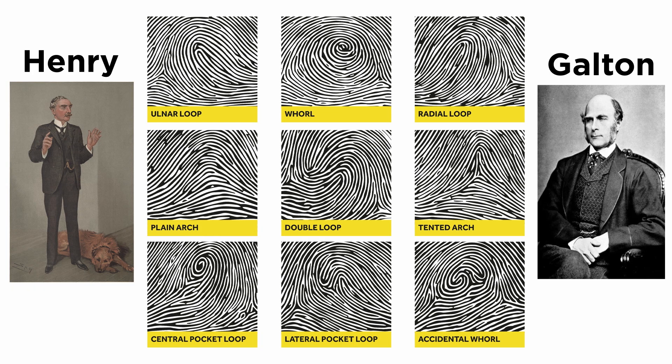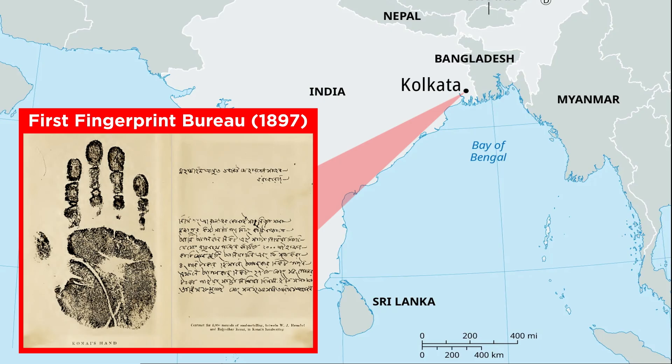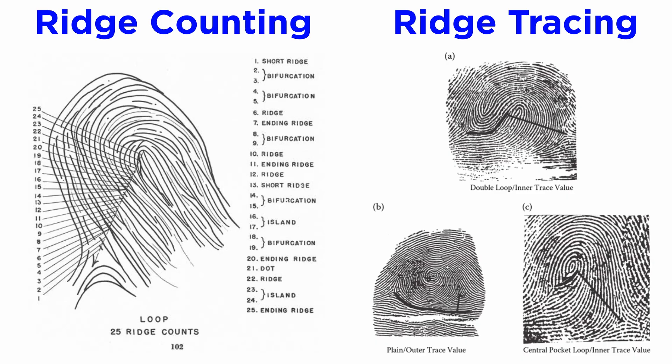To review, Henry studied fingerprints extensively and consulted Sir Francis Galton in devising a fingerprint classification system for criminal investigation. Due to Edward Henry's efforts, the first fingerprint bureau in history was established in Calcutta, India in the year 1897. Before learning how fingerprint classification works, we need to understand two basic concepts: ridge counting and ridge tracing.